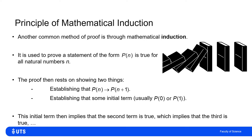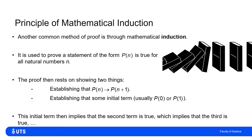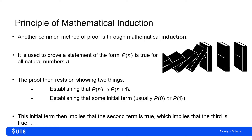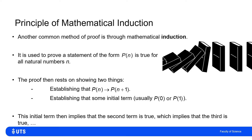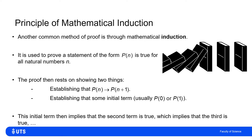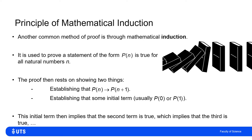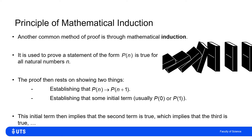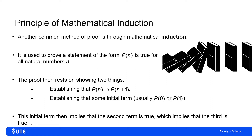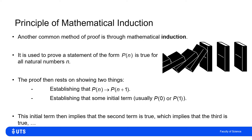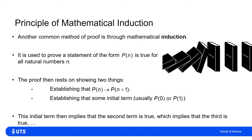You can think of this a bit like setting up cascading dominoes. We have to ensure that each domino will knock down the one after it — that p(n) will establish the truth of p(n+1). And then we have to establish that we can knock over the first domino.